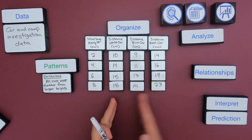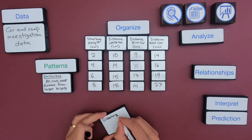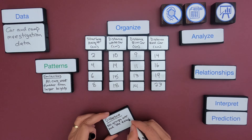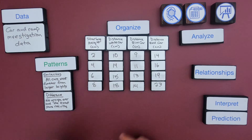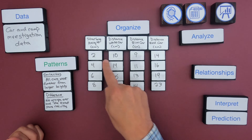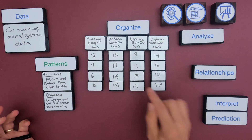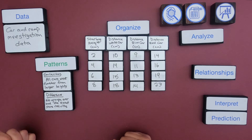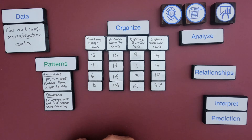Now let me find a difference. As I look across, I find that at the starting heights of two, four, six, or eight, there's never a time where the cars had the exact same results. So that would be a difference I notice. To figure out patterns, you look up and down vertically, and then side to side horizontally.